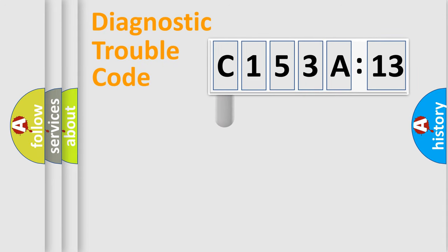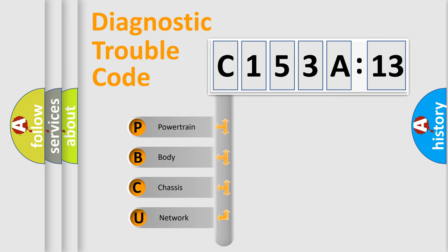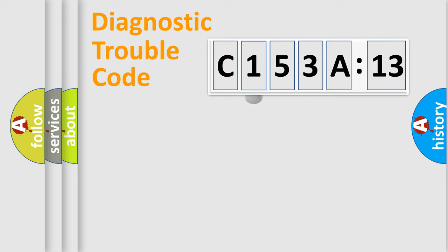First, let's look at the history of diagnostic fault code composition according to the OBD2 protocol, which is unified for all automakers since 2000. We divide the electric system of automobile into four basic units: Powertrain, Body, Chassis, and Network.